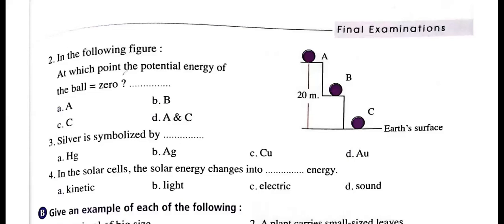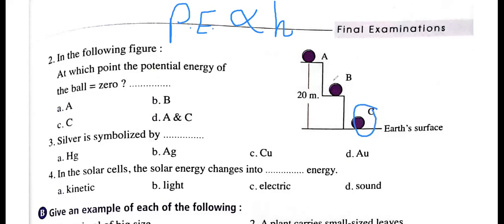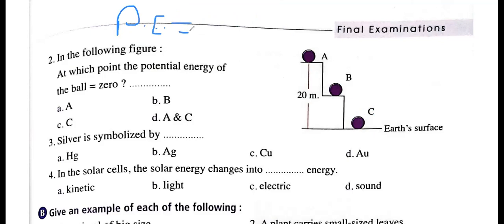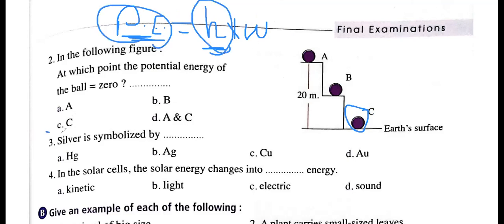In the following figure, at which point does the potential energy of the ball equal zero? Potential energy is directly proportional to height. Point C has a height equal to zero — it is on the ground. Since height equals zero, potential energy equals zero. We know potential energy equals weight times height. Since height equals zero, PE equals zero. The answer is C.